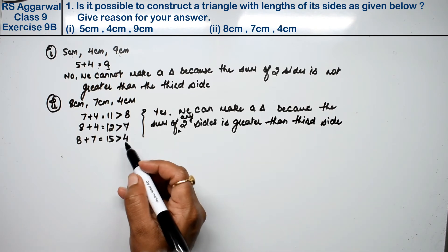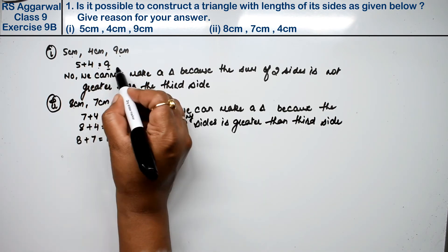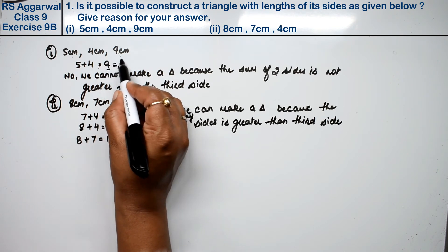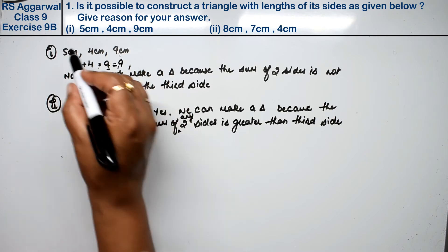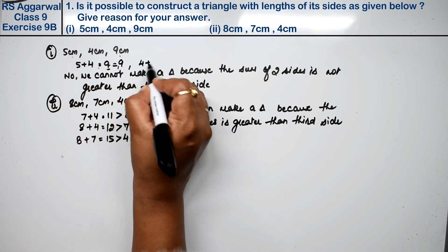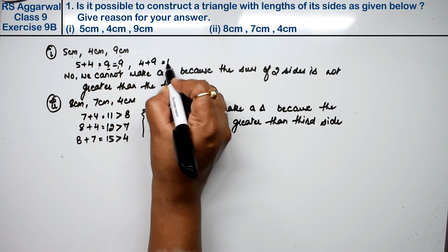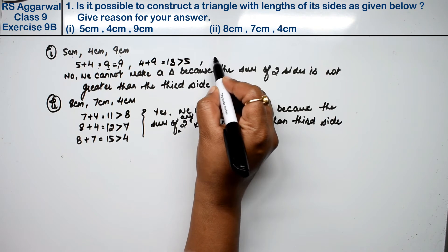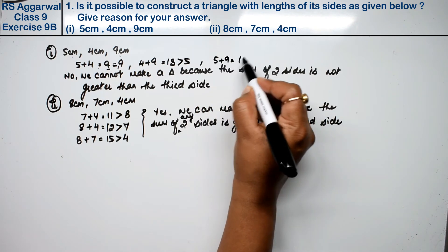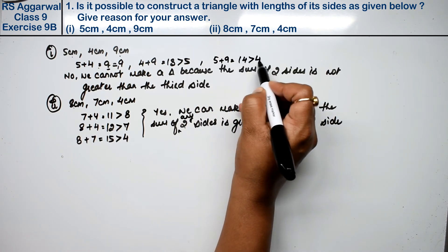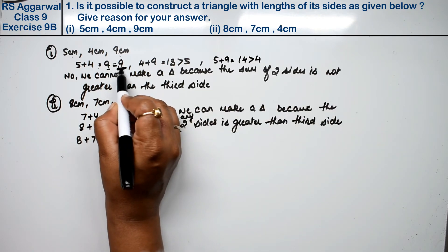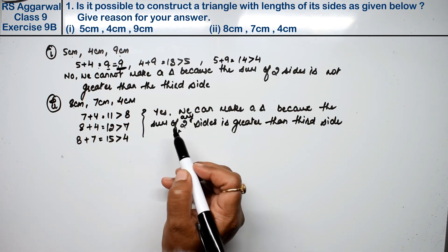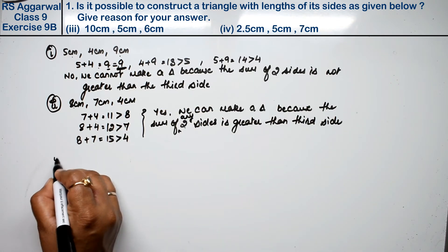Now, an important note: all three conditions must be fulfilled for a triangle to be possible. For example, 5 plus 9 equals 14 which is greater than 4, and 4 plus 9 equals 13 which is greater than 5 — but the first condition 5 plus 4 equals 9 is not strictly greater. Since not all conditions are fulfilled, a triangle cannot be formed.